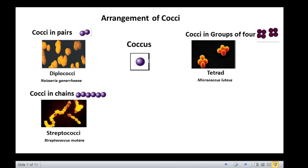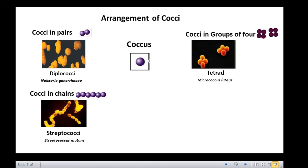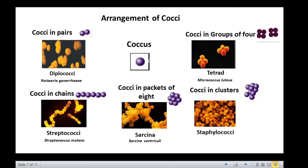If the cocci are arranged in packets of eight, then they are called sarcinae, exemplified by Sarcina ventriculi. Sometimes the cocci are arranged in clusters like a bunch of grapes. Such an arrangement is called staphylococci, an example of which is Staphylococcus aureus.